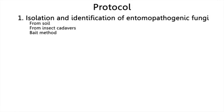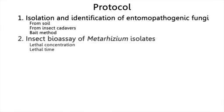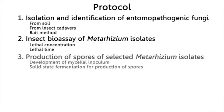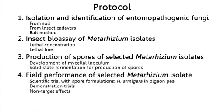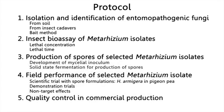This video will show you the protocols for isolation and identification of local fungal isolates, insect bioassay to screen and select more potent strains, the production of spores of selected Metarhizium strains, and a protocol to create a cost-effective formulation of the micro insecticide for field applications. Quality control measures to be taken during commercial production will also be highlighted.